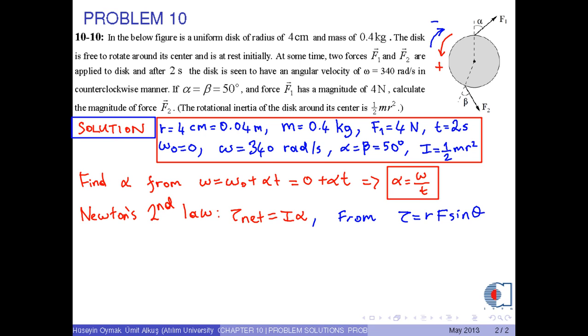Now, if we choose the counterclockwise direction as plus and the clockwise direction minus, then net torque is equal to minus R times F1 times sin alpha plus R times F2 times sin beta.